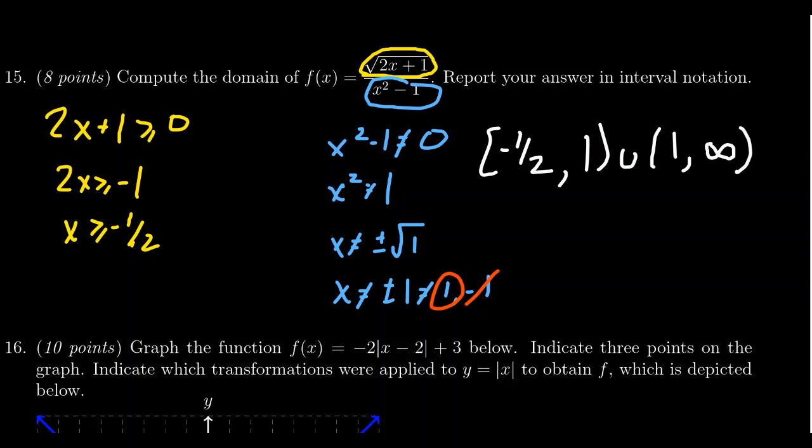We always put a parenthesis on infinity, because infinity is not a real number, hence it's not included. So notice here that you need a parenthesis on infinity. You need a parenthesis on the 1, because it's not included. But you do need a bracket on the negative 1 half, because that is part of the domain. And therefore, the correct answer would be negative 1 half to 1 union 1 to infinity, where 1 is omitted and negative 1 half is included.